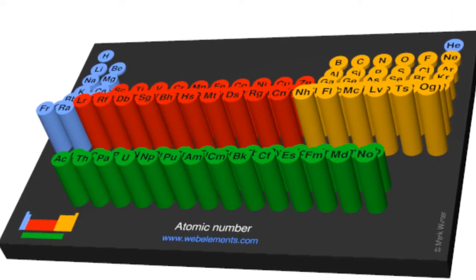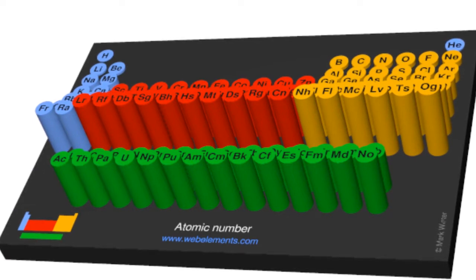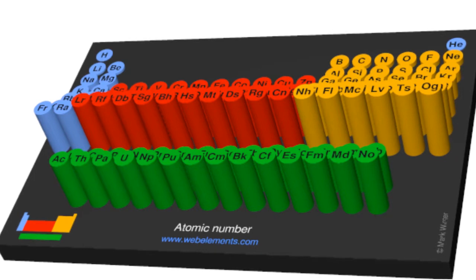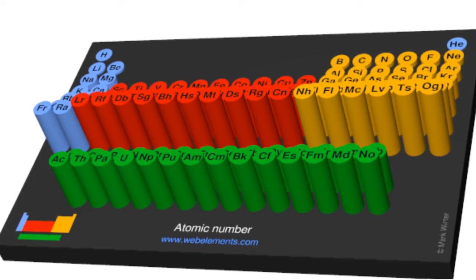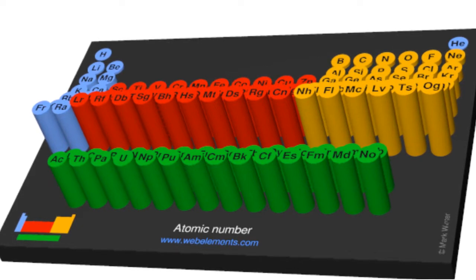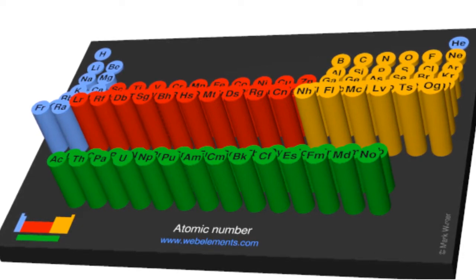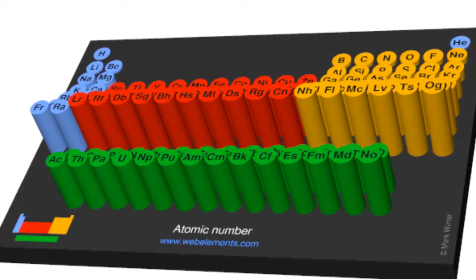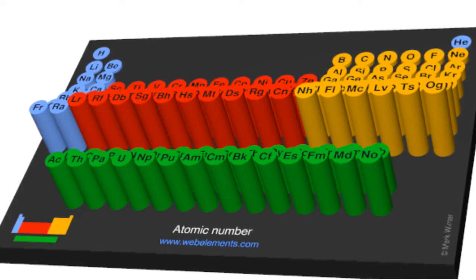Mendeleev decided to arrange the elements in order of increasing atomic number, that is, the number of protons that you find inside the nucleus of each of the element's atoms. Previously, what had been chosen was an order in terms of increasing atomic mass. That was actually slightly tricky because some of the elements needed to be swapped around.